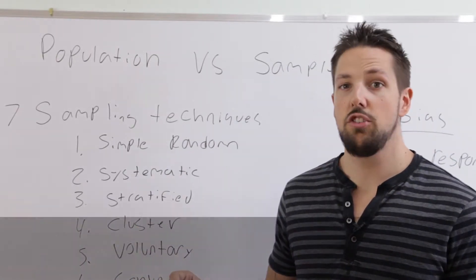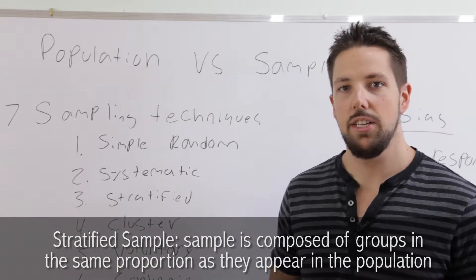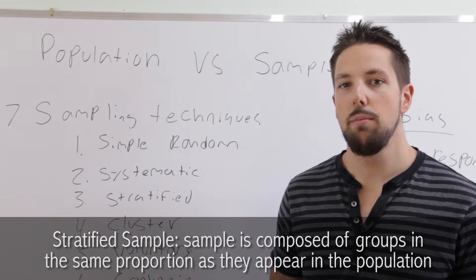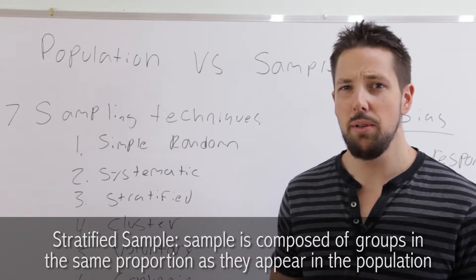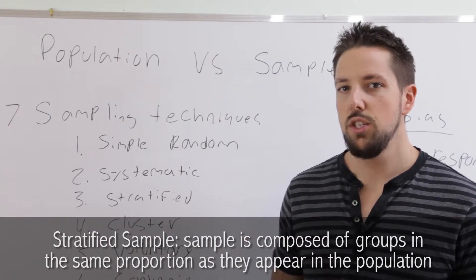The next type we have is a stratified sample. A stratified sample is when the population is broken down into specific groups, like age or gender, and you compose your sample of the same groups that appear in the population in the same exact proportions.